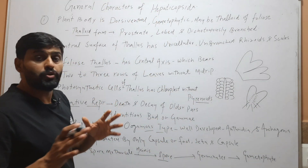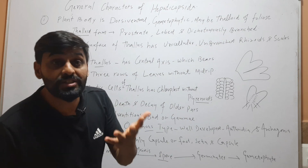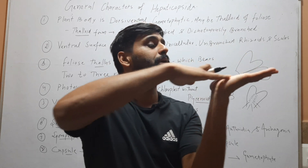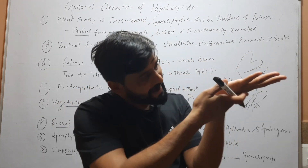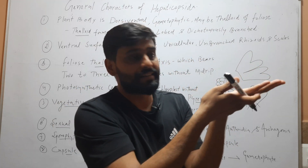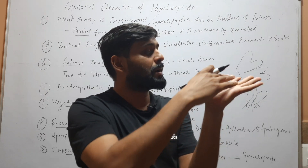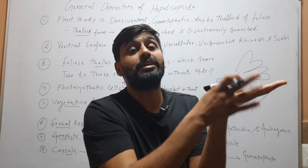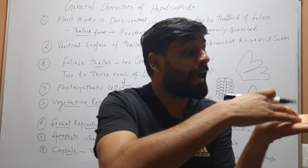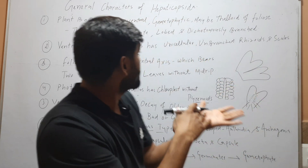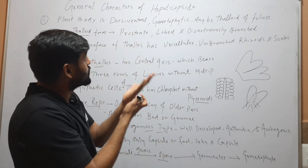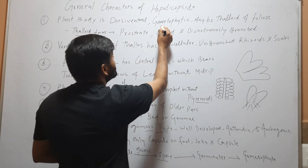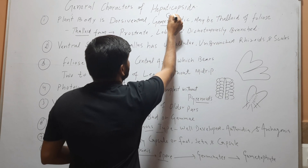The plant body of Hepaticopsida is dorsiventral, meaning it has two sides like this palm. The upper side is called the dorsal side and the lower side is called the ventral side. The plant body is dorsiventral and it is gametophytic, meaning haploid.